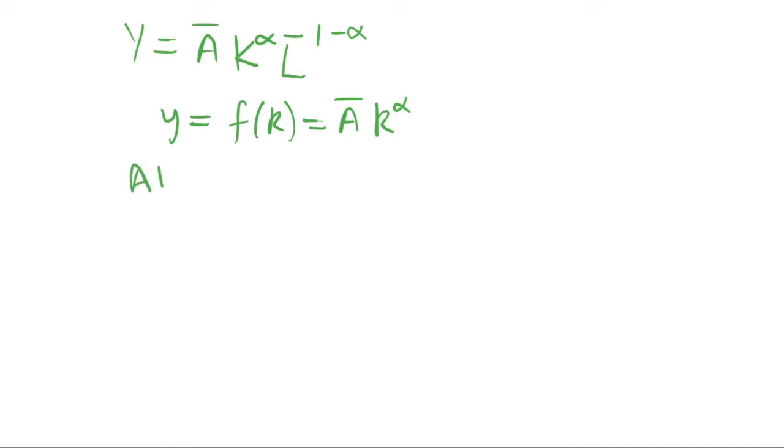So at our steady state, which I just call ss, we know that this condition is true: we have that our depreciation is equal to our investment. I'll call this k star to show that it's a steady state. So investment, which is your savings multiplied by our output per capita, is equal to depreciation here.